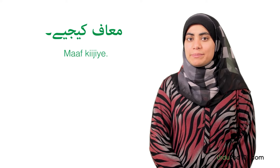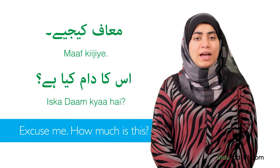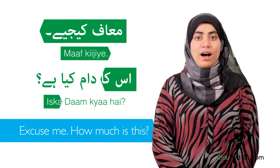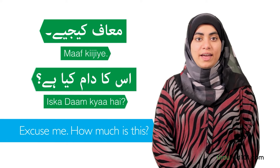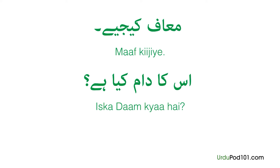You see something you like and want to ask the shopkeeper how much it costs. The first thing to say to a shopkeeper is: Maaf kijiye — do you remember what that means? Excuse me. Maaf kijiye. Iska daam kya hai? Excuse me. How much is this? If you want to be more specific when asking 'how much is this?' and refer to a certain type of object, you just need to insert the object in between the word iska — between 'is' and 'ka.'